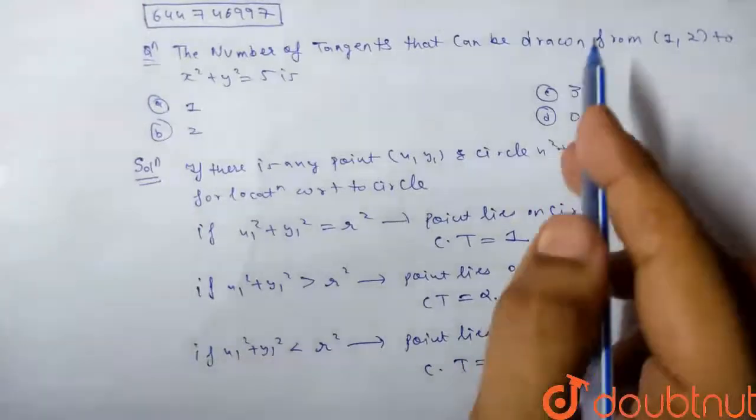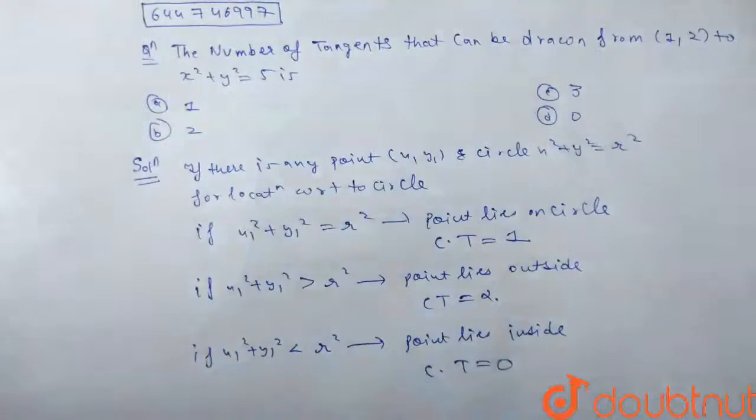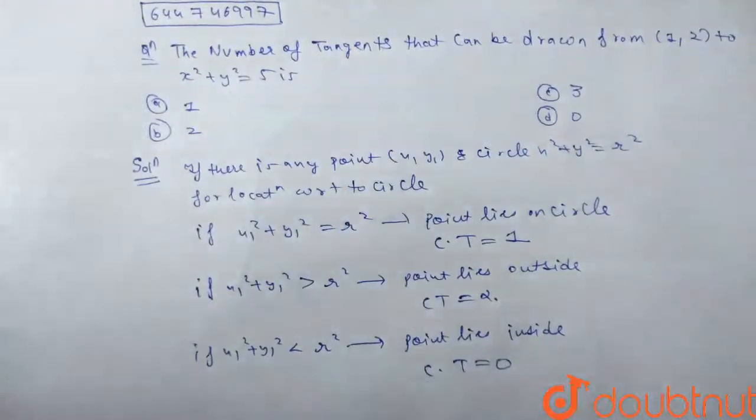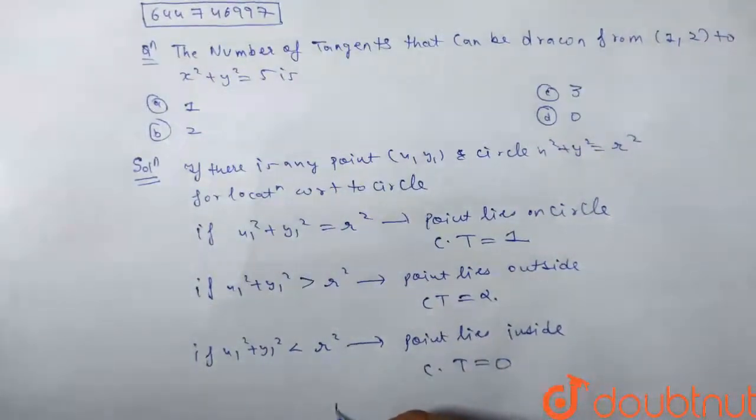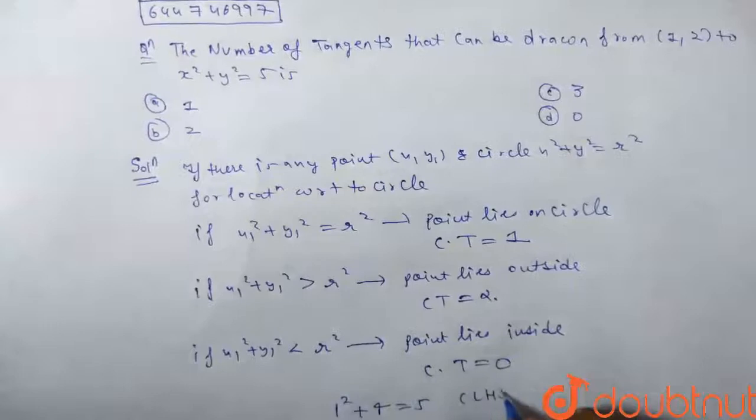Applying this concept to this question, putting the point (1, 2) into the given circle, we get 1² + 2² = 1 + 4 = 5. Hence, LHS equals RHS, which means